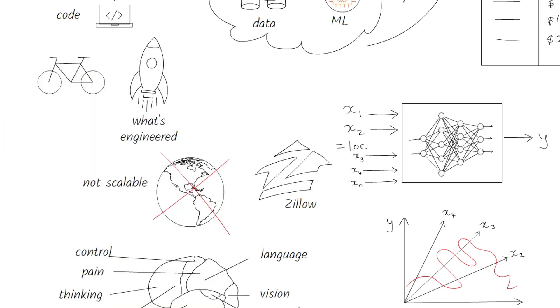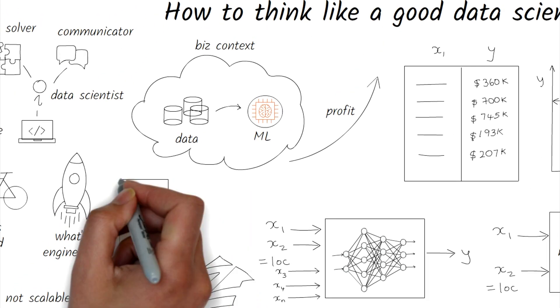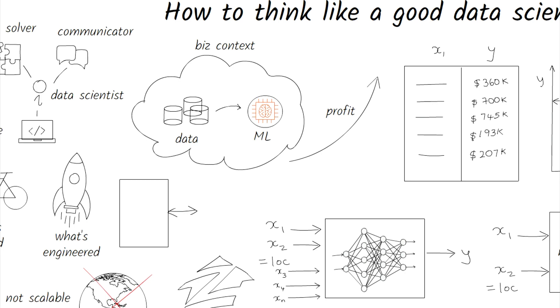Experienced data scientists do not over-engineer. Today, it is easy to create models using simple APIs. It's harder to think through the business problem, understand the data, scope the model so it has better performance, and has a much higher chance of being deployed into production.